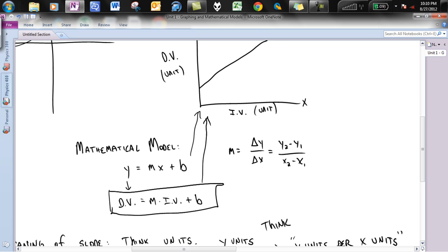Things to note with this is m is, of course, the slope, which is change in y over change in x, which can be rewritten. Remember, delta y or delta anything is always your final minus your initial.